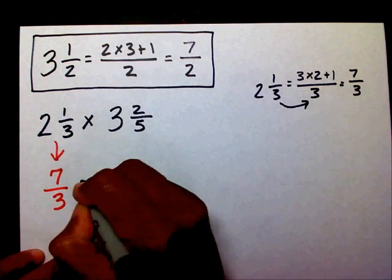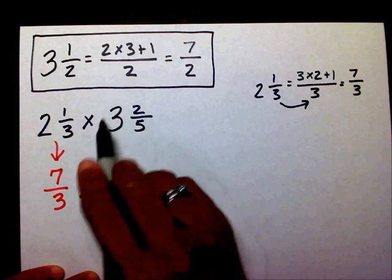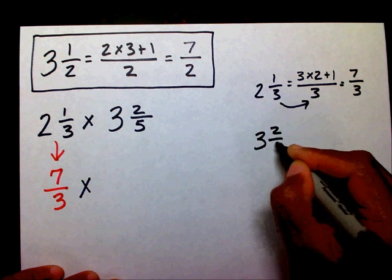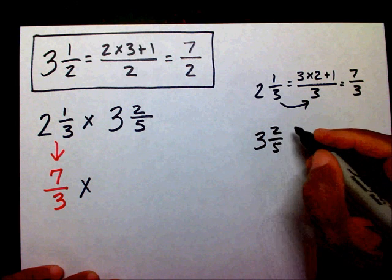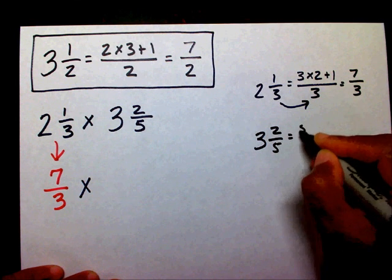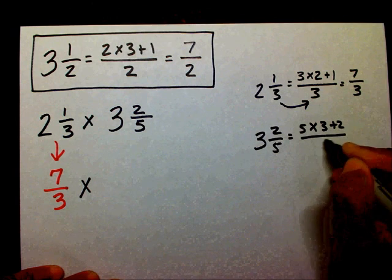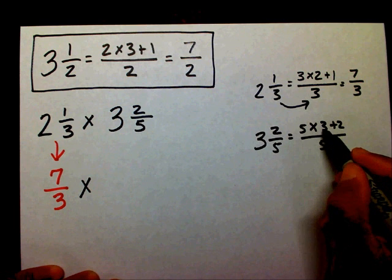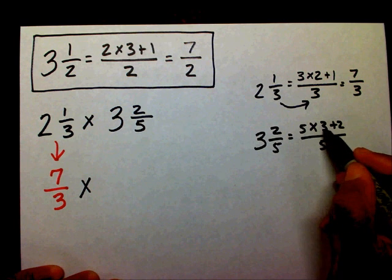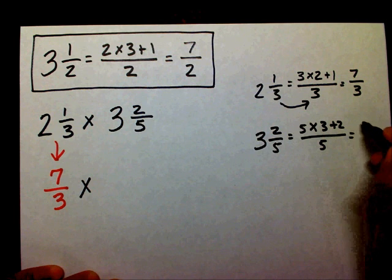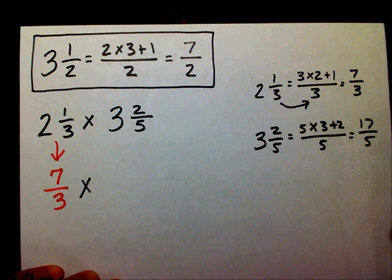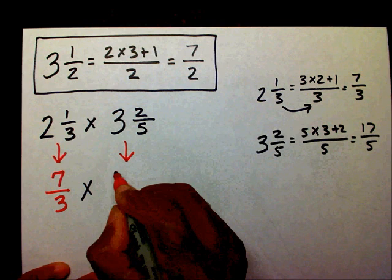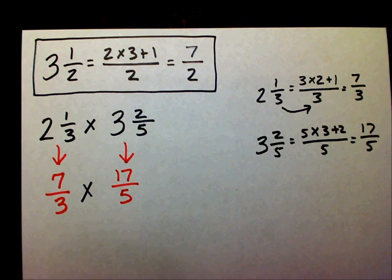I'm going to bring down my multiplication sign. Now I need to change three and two-fifths into an improper fraction. Three and two-fifths equals five times three plus two over five. Five times three is fifteen plus two is seventeen. So that gives me seventeen-fifths.